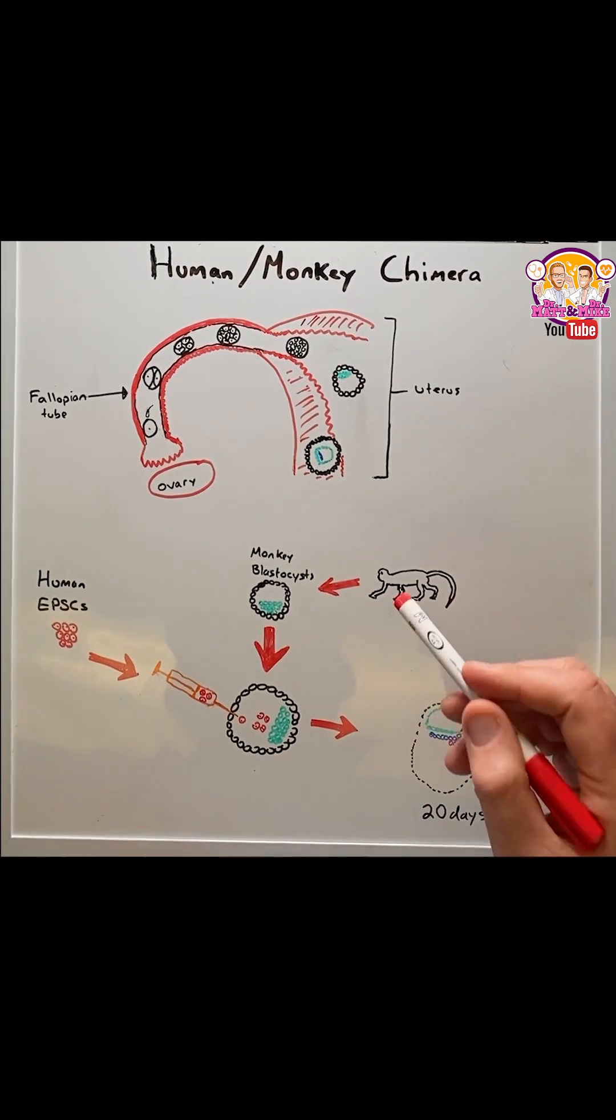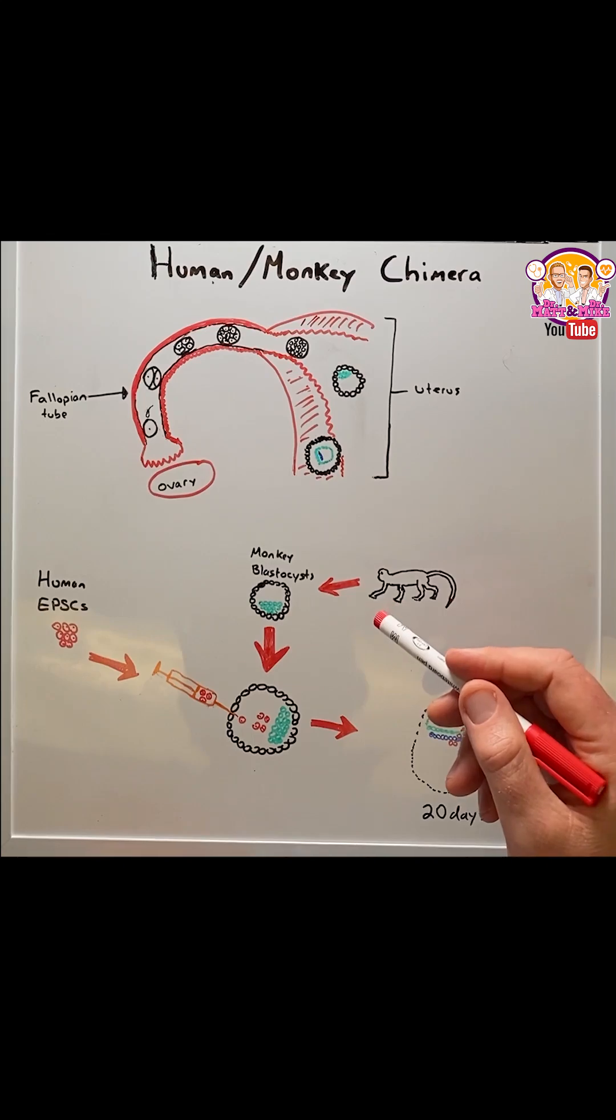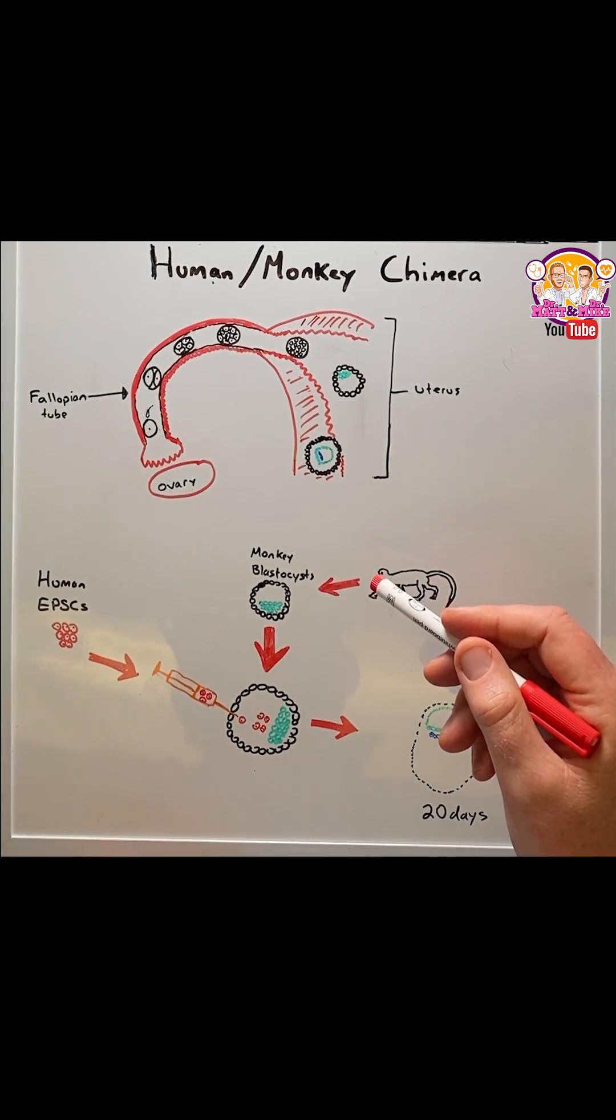Thousands of people die each year waiting for organ transplantation. So scientists are trying to come up with ways to make organs in the lab to reduce these preventable deaths.